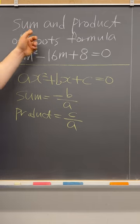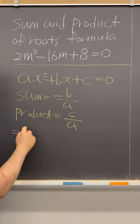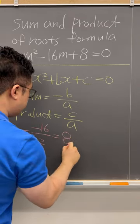So that's why for this question, the sum of this quadratic equation has to be negative b over a, that is negative 16 over 2, which is going to be positive 8.